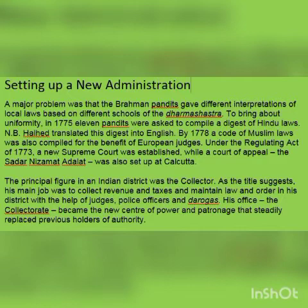The British thought of a plan to bring about uniformity. In 1775, eleven Pandits were asked to compile a digest of Hindu laws — a digest meaning a summary of legal materials compiled together. By 1778, a code of Muslim law was also compiled for the benefit of European judges, so that any European collector coming to India would not need to learn so many Dharm Shastras.